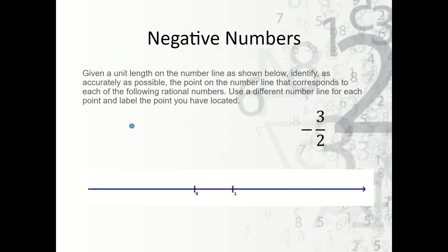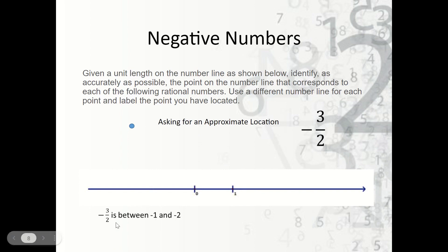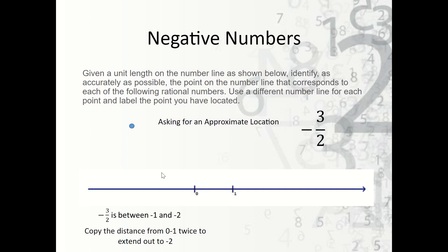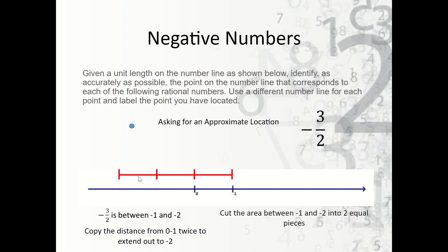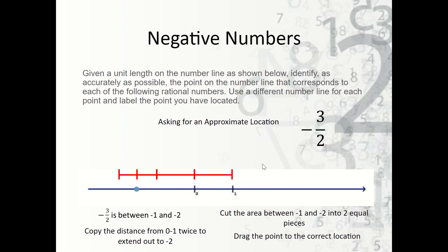Now what if we're asked to plot a negative number on the number line? This is negative three halves. We want the approximate location. We should notice that negative three halves is between negative one and negative two because this is really negative one and a half. We take the distance from zero to one and copy it towards negative two — that gives negative one and negative two. We cut that part into two equal pieces because the denominator is two, and the point should be right about here, representing negative three halves.